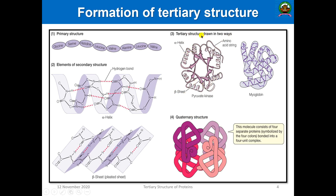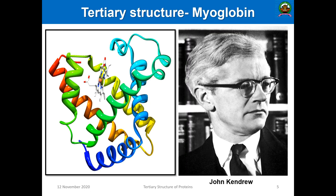The study of tertiary structure in historical perspective is a major milestone. Myoglobin was the first protein whose three-dimensional structure was solved by X-ray crystallography — the most powerful technique. Here you can see the actual structure: it is fully alpha helical, consisting of several domains and a heme group. The globin part binds with the heme part. Myoglobin does not have a beta pleated sheet; it is a fully alpha helical structure.